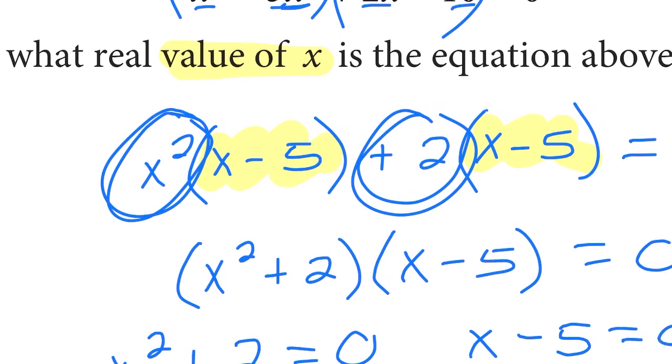And whenever you're dealing with factors set equal to 0, you can set each one equal to 0 and solve. So here, if we have x squared plus 2 equals 0, when we subtract 2 from both sides, that would give us an x squared equals negative 2.